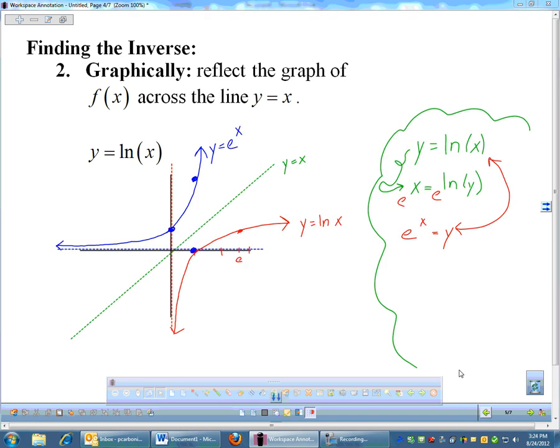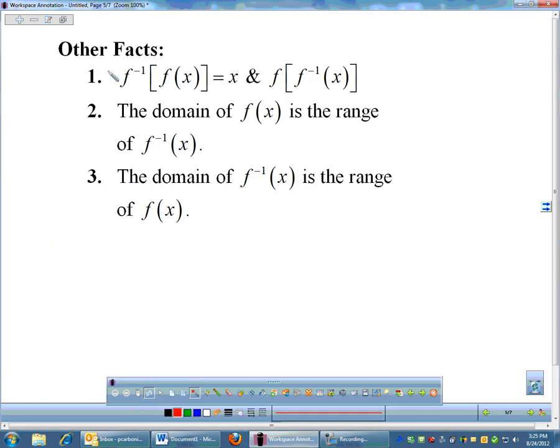A few other things with inverses. So we just talked about the graphs are reflections across y = x. You get them algebraically by swapping x and y and solving. A couple of other facts. This first one is pretty important. If you have f and its inverse, if you do the composition f⁻¹(f), you will always get x. And f(f⁻¹) is always equal to x. That's always going to be true. That's what inverses are. Another thing, the domain of f is the range of f⁻¹. And the domain of f⁻¹ is the range of f. And if you think about it, when you swap x and y, that's why it works out that way. So the domain, the x's of f(x), are the same thing as the range of f⁻¹, because you swap the x's and y's to get the inverse.